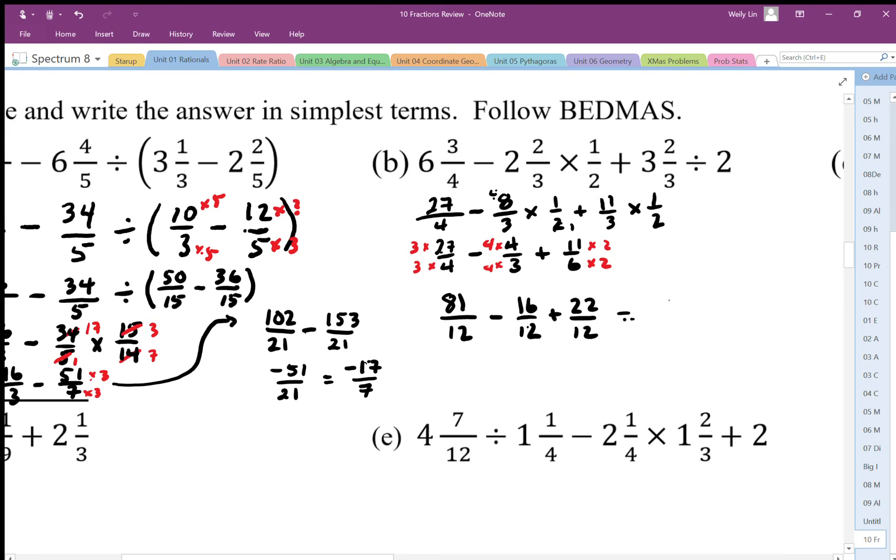So this ends up being, when we add it all up, we end up with 87 over 12. And 87 and 12 share a common factor of 3, so if we divide by 3 we end up with 29 over 4. So that represents our final solution.